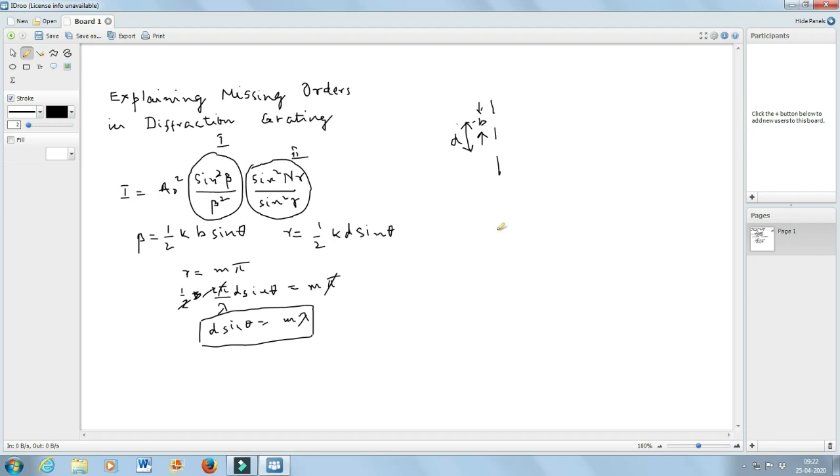a minima will occur and therefore beta is half kb sin theta is equal to npi. So k is 2 pi by lambda, this is equal to npi and then this 2 goes and pi goes. So b sin theta is equal to n into lambda. This is the single slit minimum,